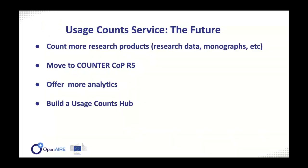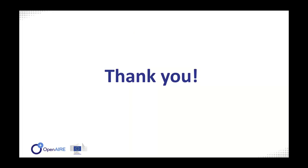For the future: we need to engage more content providers to count more research products like research data, monographs, and books. We are planning to move to COUNTER code of practice release 5. We aim to offer more enhanced visualization to cover more stakeholders. And we are trying to build a usage count hub that combines and integrates information for many research products — for example, combining publications with research data. Thank you very much for your attention. I'm ready to answer any questions.